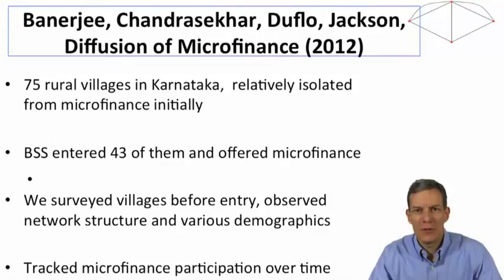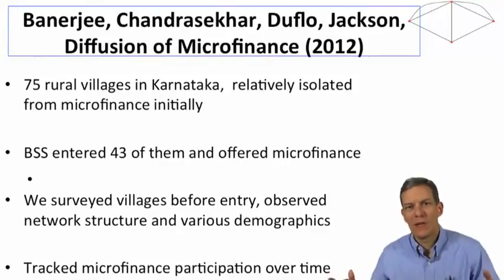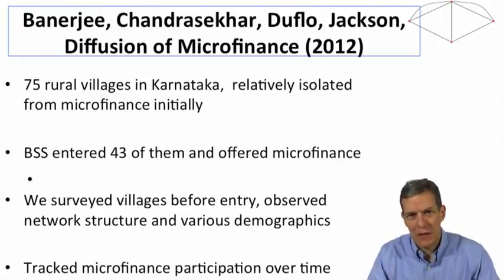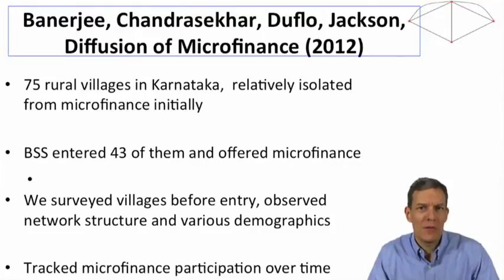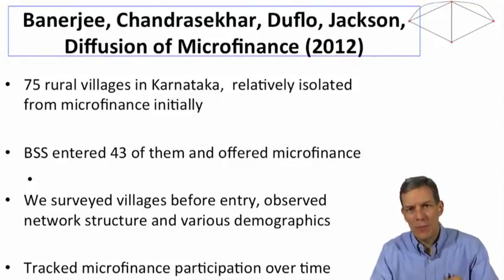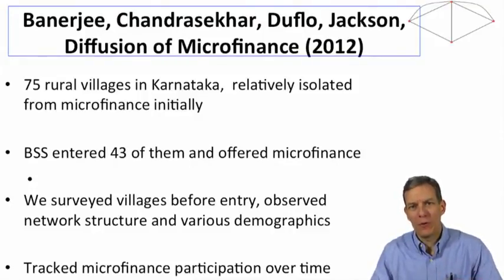Across these different villages, some got an eventual participation rate in the loan program in the mid-40s — about 44% was the highest of any village. The lowest of any village was about 7%. One thing we can ask is: did it matter which people they talked to in a village first?